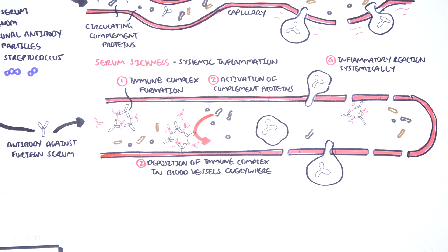The symptoms of serum sickness — such as fevers, urticaria, arthralgia, and splenomegaly — will typically resolve once the immune system clears up the deposited immune complexes.